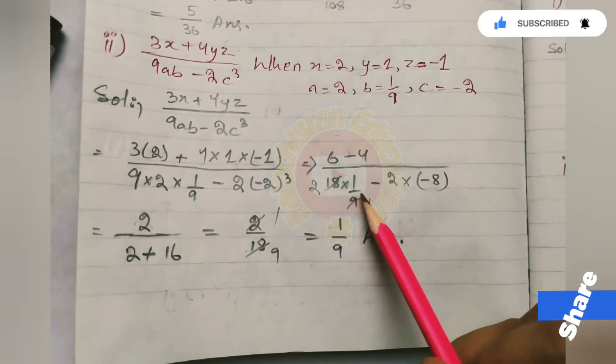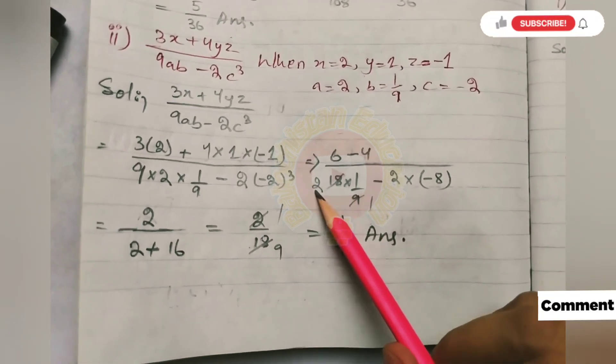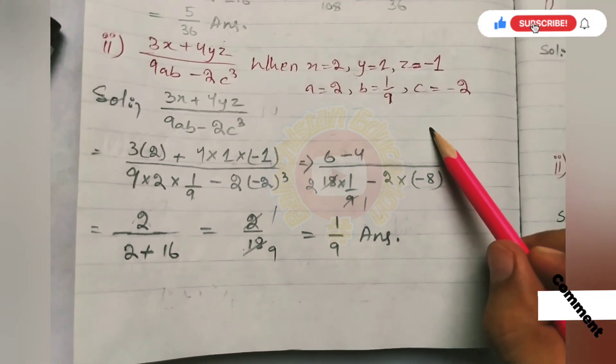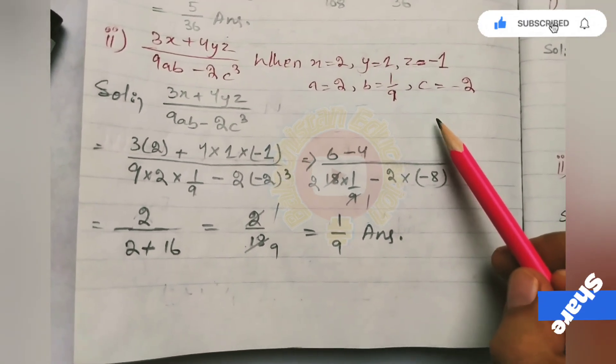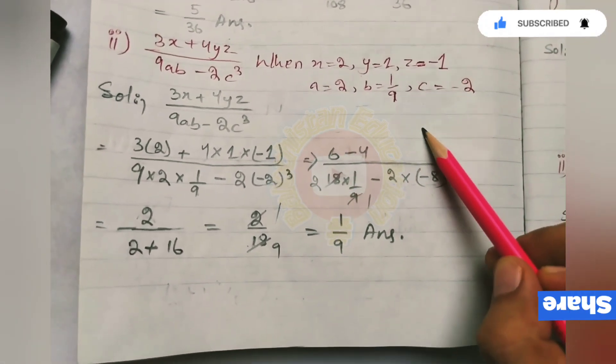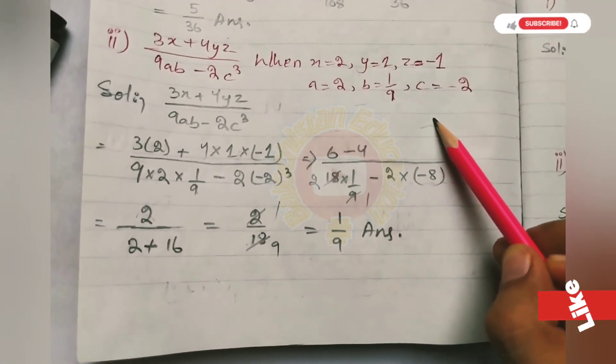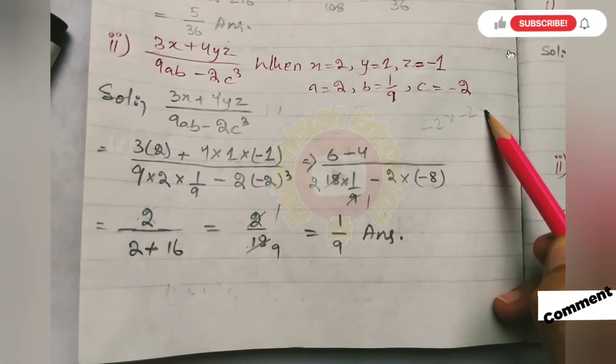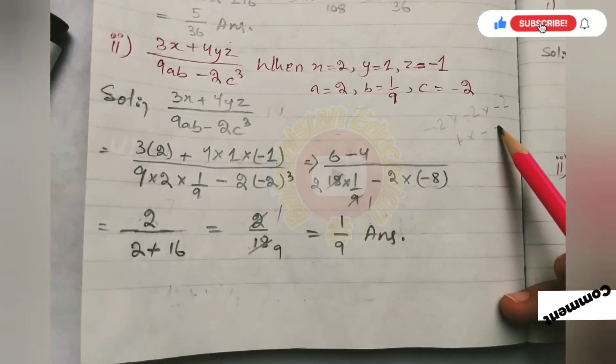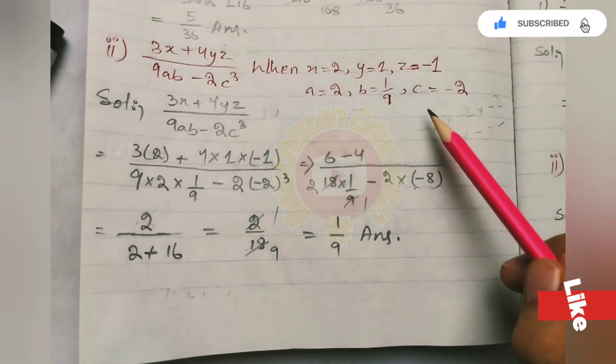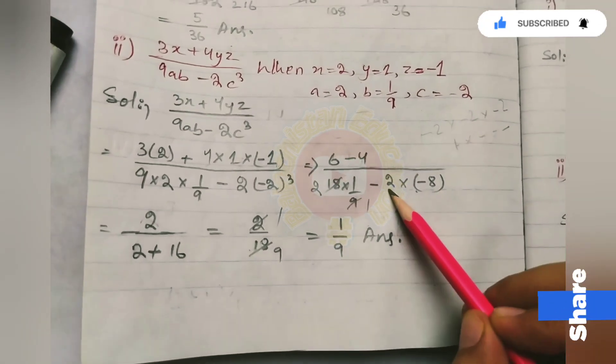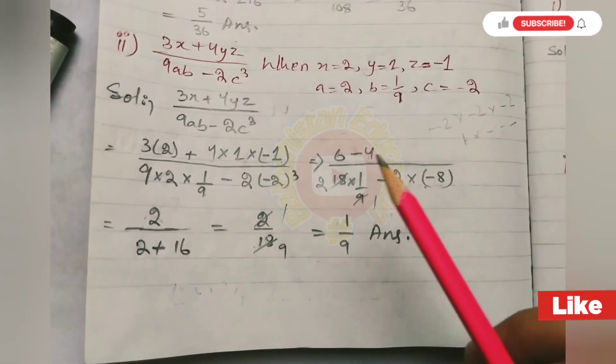Then here we have 18. 9 times 1 is 9, 9 times 2 is 18. So here we have 2 times itself for 3 times, so 8 will be negative. Negative cube is cube. Again, negative will be negative. Minus 2 multiplied by minus 2 multiplied by minus 2. Minus minus plus. Plus multiplied by minus equals minus. So our answer will be minus. But if it is square, then it will be positive. 8 times 2 is 16.